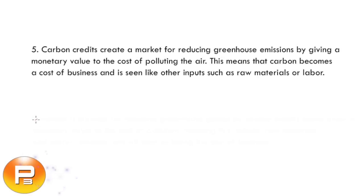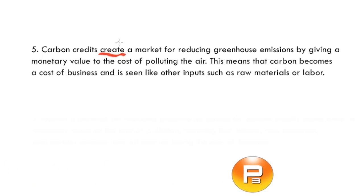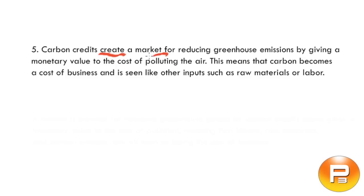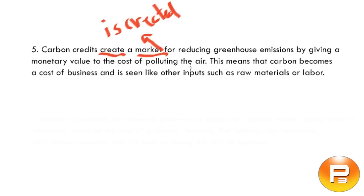Number five — let's change some of these verbs. Take a look at this first one: we have 'create carbon credits,' 'create a market.' I'm going to take that and say 'a market for reducing greenhouse gases is created' — sorry about my writing — 'by giving a monetary value to the cost of polluting air.' I'm also going to change this one, because when we get this meaning I can go to 'which means,' or I can even reduce that further to 'meaning.'